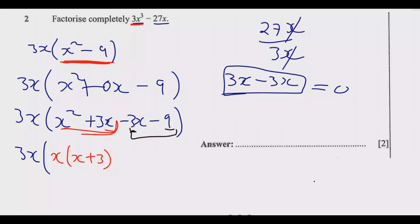Then we have -3(x + 3). After this, we get what is outside, and what is common. We have 3x, then we factor out x + 3, which is common, and we remain with x and -3. So the final answer is 3x(x + 3)(x - 3).